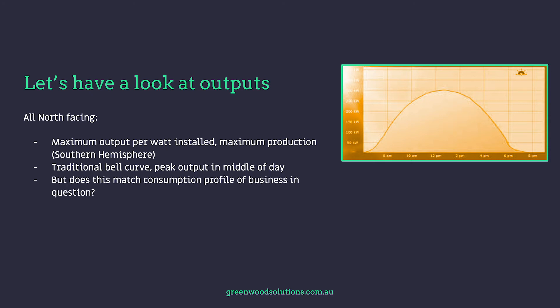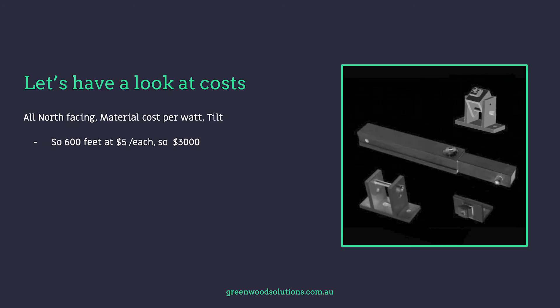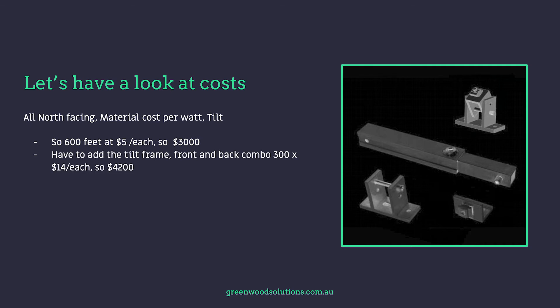We have a 350 watt panel and 285 of them, giving about 600 metres of rail using 4.2 metre lengths — 145 lengths — with feet placed every 1,000 mm, for a total of about 600 feet. For all north-facing material cost per watt for tilt: 600 feet at $5 each is $3,000; tilt frame front and back combo, 300 at $14 each is $4,200; rail cost at $25 a length for 145 lengths is $3,625. Total excluding joiners is $10,825.